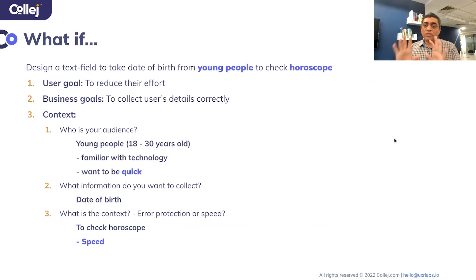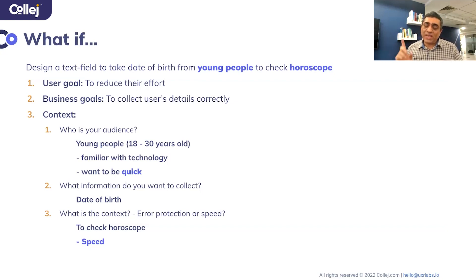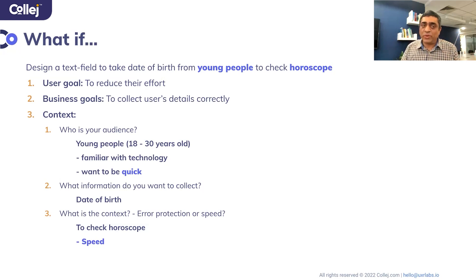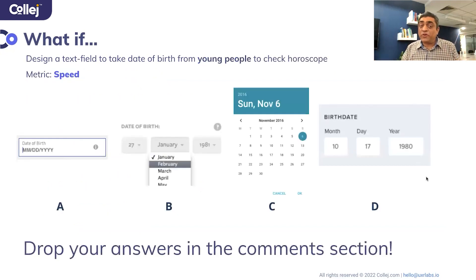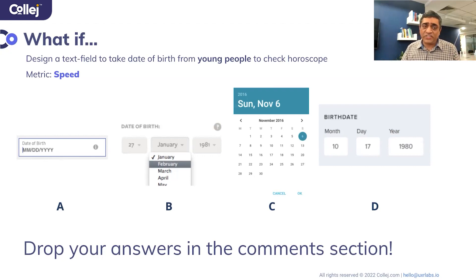Here's the challenge for you: what if you now change the context and you're taking date of birth from young people who want to generate their horoscope online? The key differences are that users want quick results and the interface should support speed. The user expectation is a fast interface. So how would you solve it? Here are four choices to consider — and it doesn't have to be a text box; it could be a dropdown or even a calendar widget. Which of these four choices would you select for speed for young people checking their horoscope?